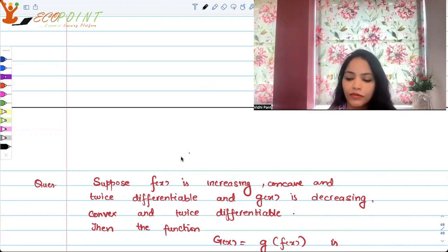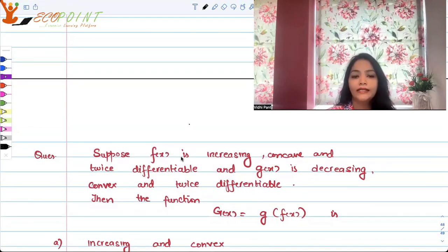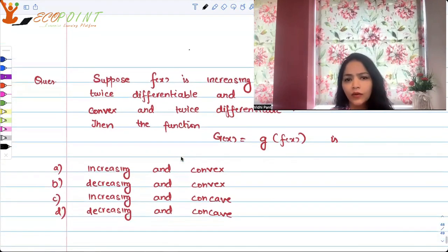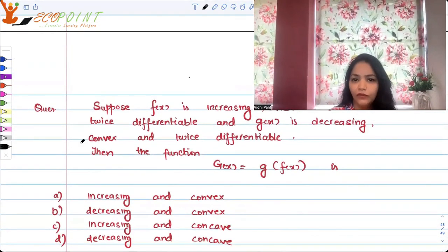The question is: suppose f(x) is increasing, concave, and twice differentiable, and g(x) is decreasing, convex, and twice differentiable. Then the function which is the composition G(x) = g(f(x)) is: a) increasing and convex, b) decreasing and convex, c) increasing and concave, d) decreasing and concave. What would it actually be?